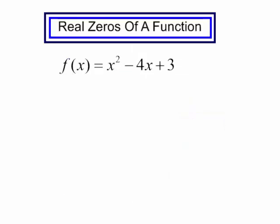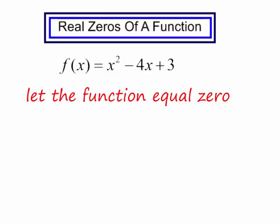I have the function f of x is equal to x squared minus 4x plus 3. In order to find the zeros of this function, I will let the function equal 0, and I will solve this equation. Let's get to work.